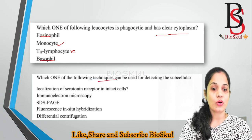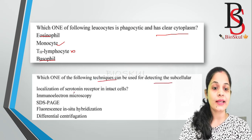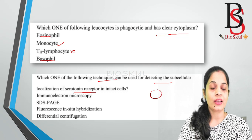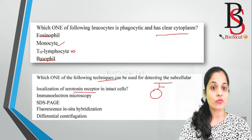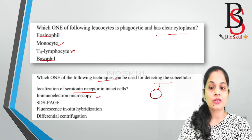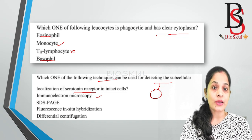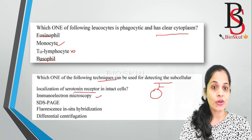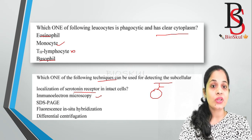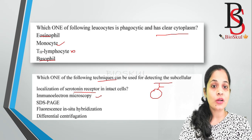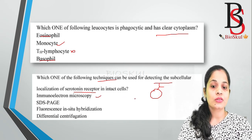Question two: which one of the following techniques can be used for detecting the subcellular localization of serotonin receptor in an intact cell? Consider this is the cell and it has the serotonin receptor. The first option is immunoelectron microscopy. Immunoelectron microscopy is a technique that combines the ability of an antibody to bind specifically to a protein with high-resolution electron microscopy to localize the subcellular position of proteins. This is the correct answer.